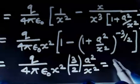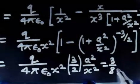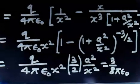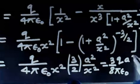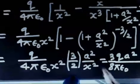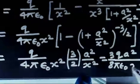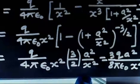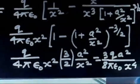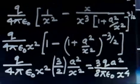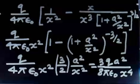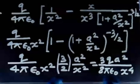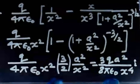Combining terms, the final electric field is 3QA² over 8π ε₀ X⁴. This is directed along the positive X axis, since the result is positive, meaning the field points away from the center along the axis.